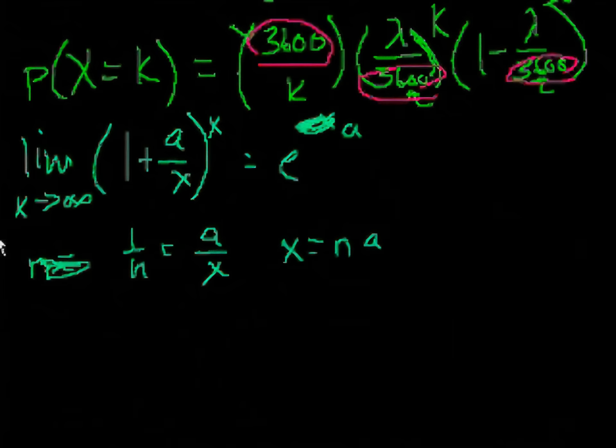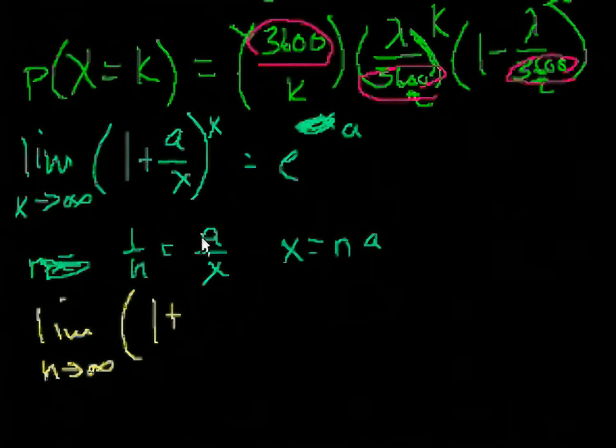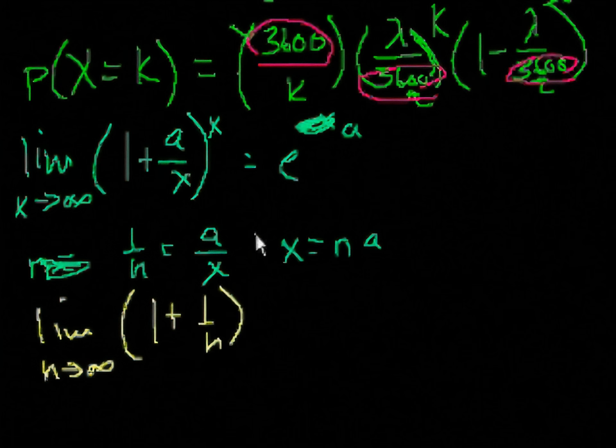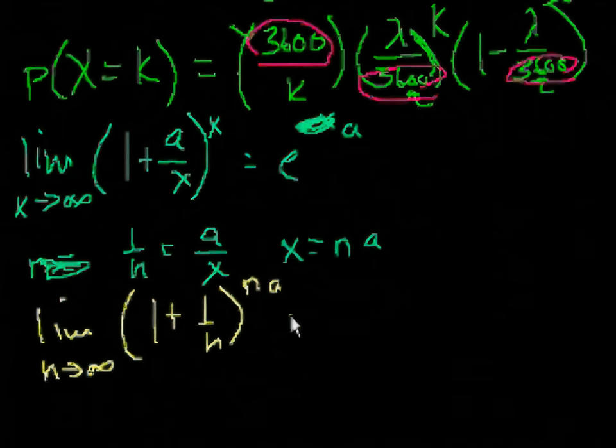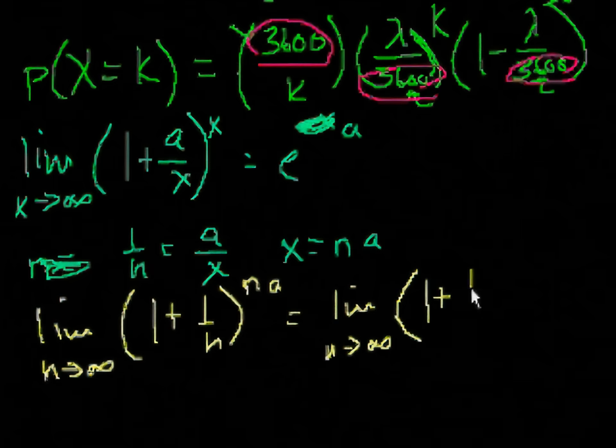Well n is x divided by a, right? So n would also approach infinity. So this thing would be the same thing as just making our substitution. The limit as n approaches infinity of 1 plus 1 over n. And x is, by this substitution, n times a. And this is going to be the same thing as the limit as n approaches infinity of 1 plus 1 over n to the n.